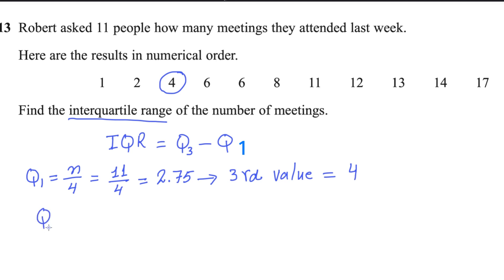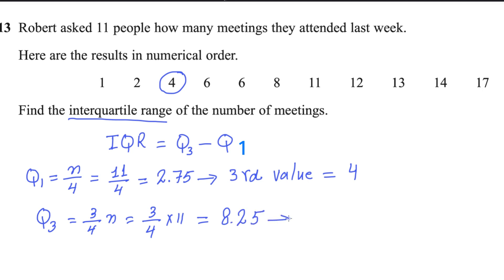Similarly, the formula for Q3 is 3 over 4 times n, where n is the number of values — Q3 is the 75th percentile. So 3 over 4 multiplied by 11 gives 33 divided by 4, which equals 8.25. As before, if you get a decimal, always round it up. The next whole number is 9, so the ninth value will be Q3.